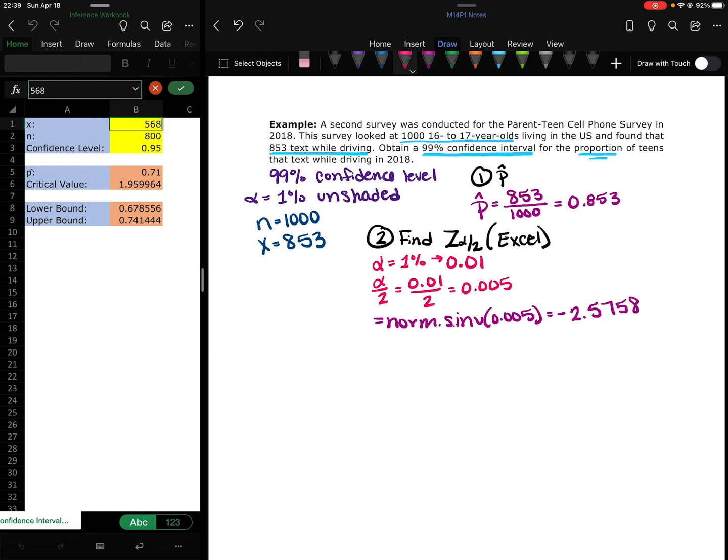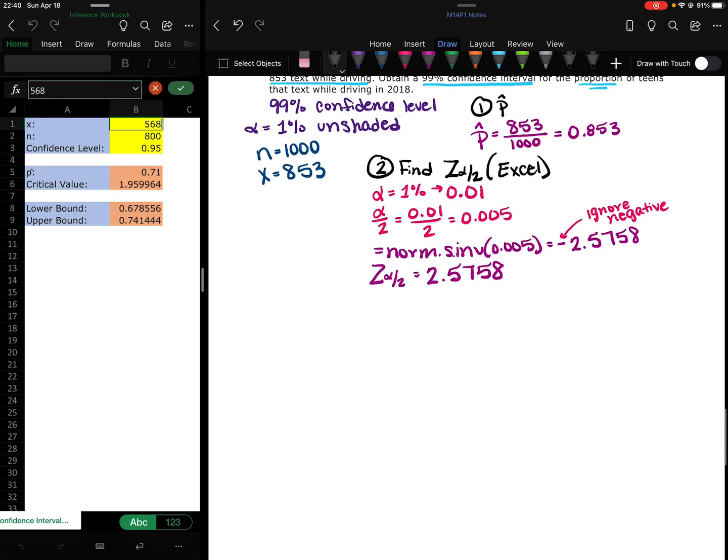We're going to ignore the negative because our z-score needs to be a positive number. But if we think about the symmetry of a curve, it's the same number. One's positive, one's negative. That gets taken care of in step 3 with the formula. So the z alpha over 2 value is 2.5758.